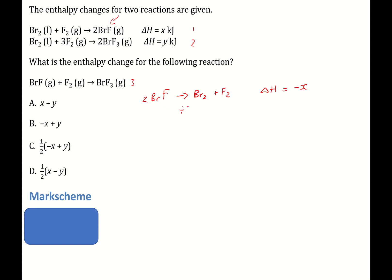So let's divide by 2. So this becomes BrF, which is looking more like what we want. This becomes a half a mole of bromine molecules. And here we also have half a mole of chlorine. And because we have half this, now the delta H also becomes minus a half x.